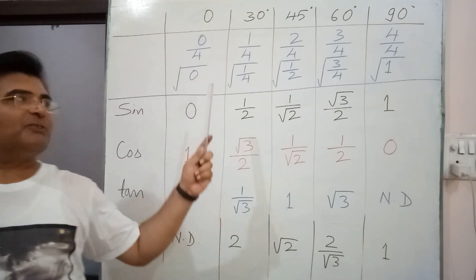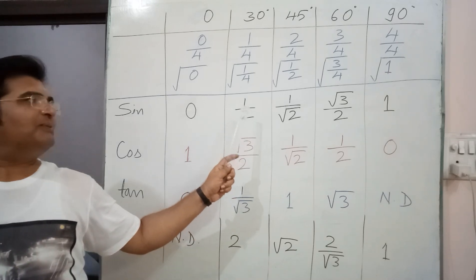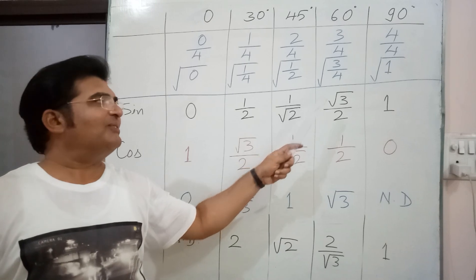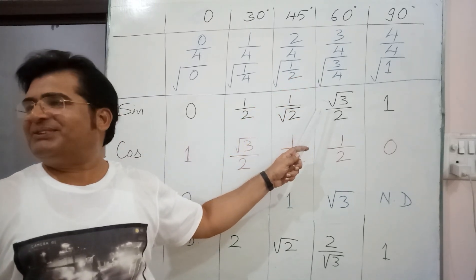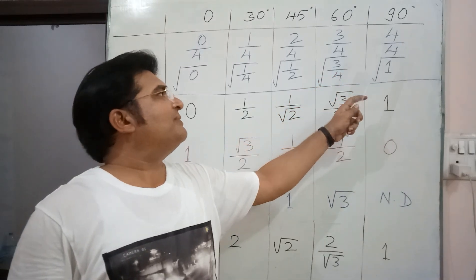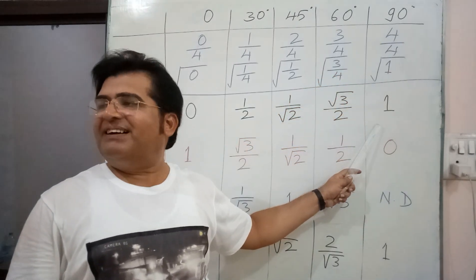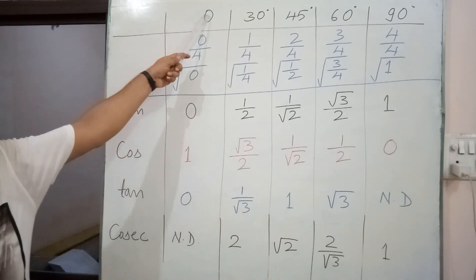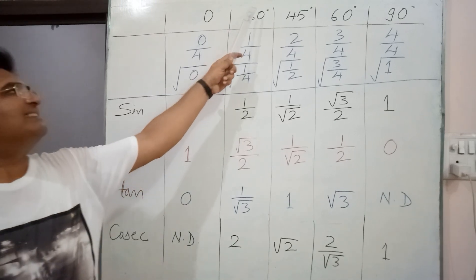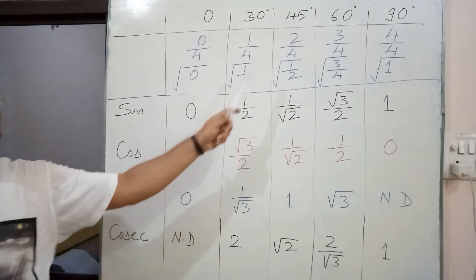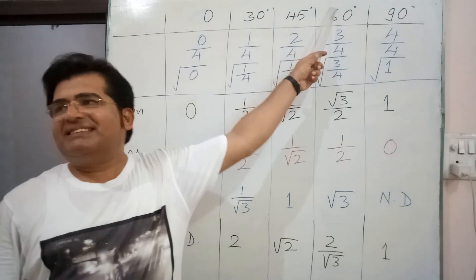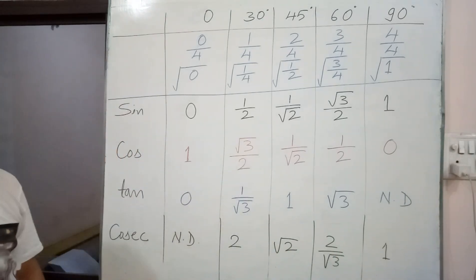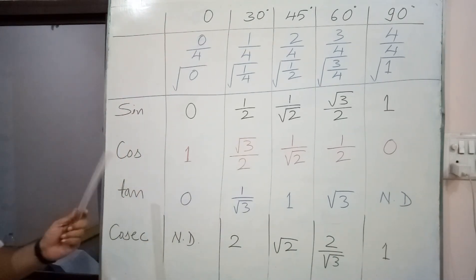Now take the square root of each value. Square root of 0 is 0, square root of 1/4 is 1/2, square root of 2/4 is 1/√2, square root of 3/4 is √3/2, and square root of 1 is 1. These are the sine values: sin 0° = 0, sin 30° = 1/2, sin 45° = 1/√2, sin 60° = √3/2, sin 90° = 1.